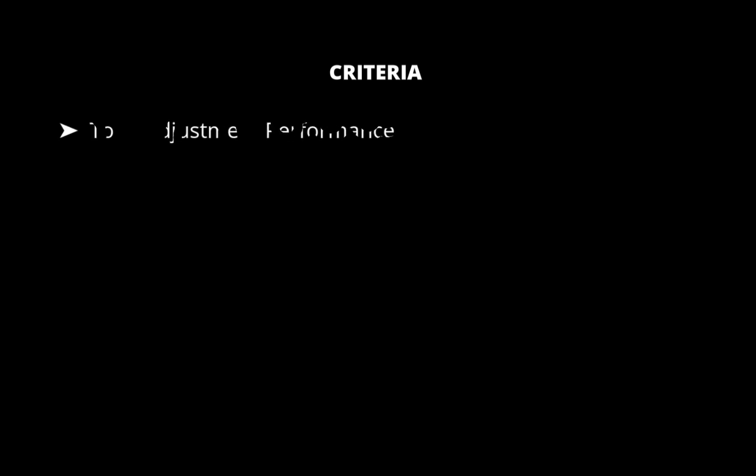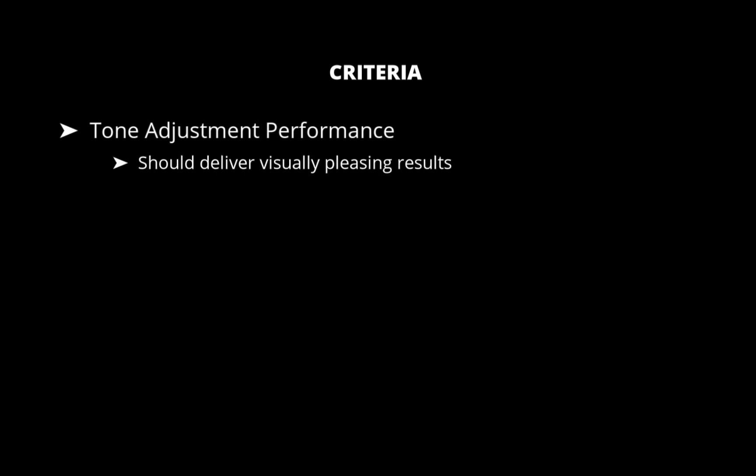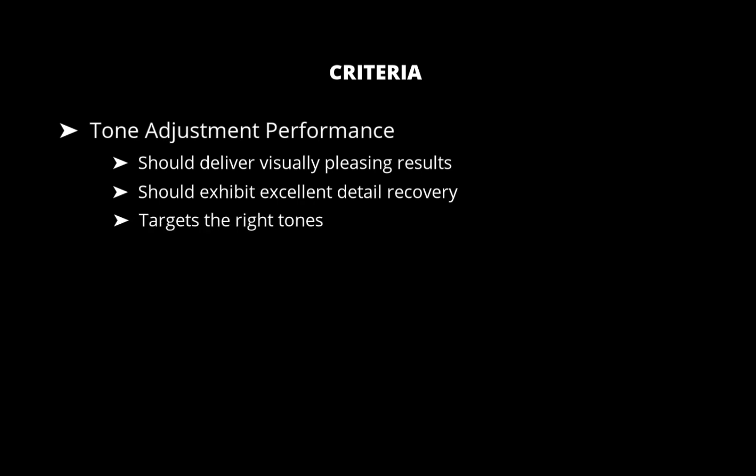The first criterion is tone adjustment performance. The iPad raw editor's tone adjustments, which include basic adjustments like exposure, highlights, and shadows, should deliver visually pleasing results with naturally looking color and good contrast on par with its desktop counterpart. It should also exhibit excellent detail recovery, able to recover detail in even the darkest shadows and brightest highlights. The adjustments should also target the right tones — for example, the shadows adjustment should affect just the darkest areas of an image while leaving the mid-tones and brighter areas untouched.